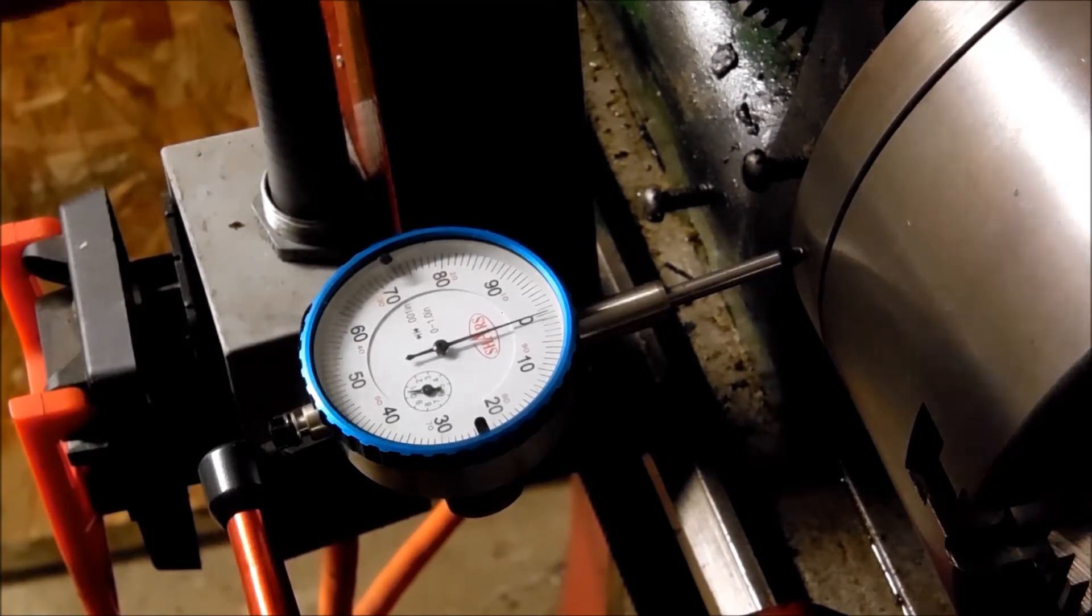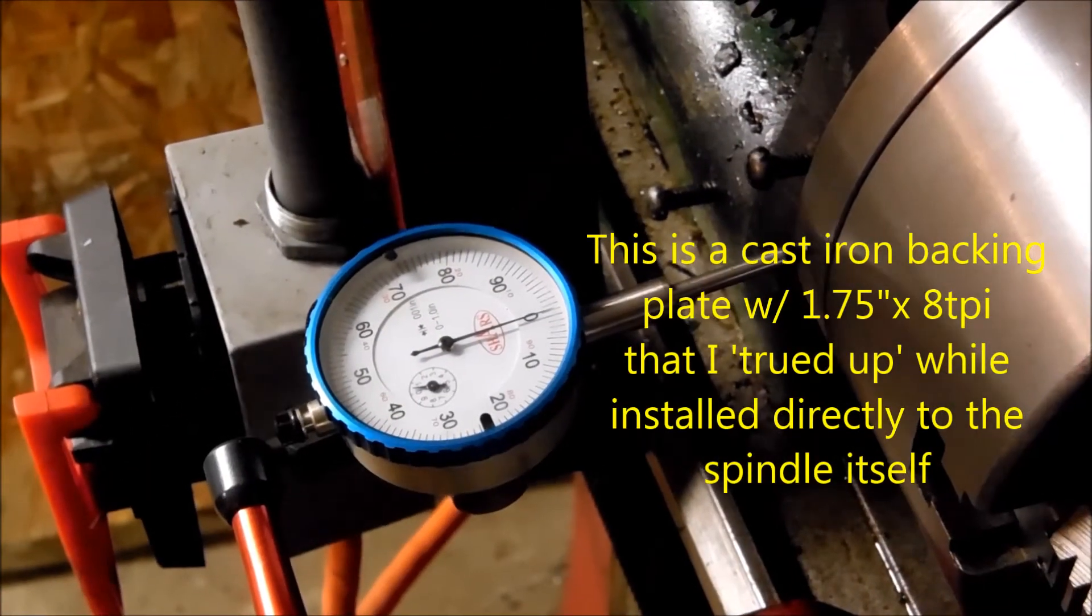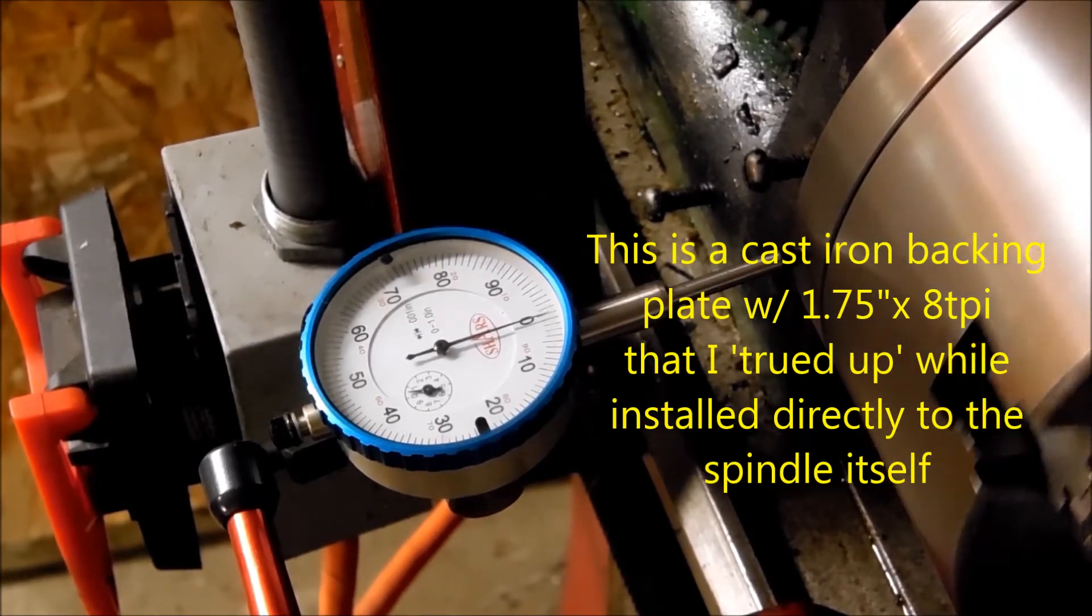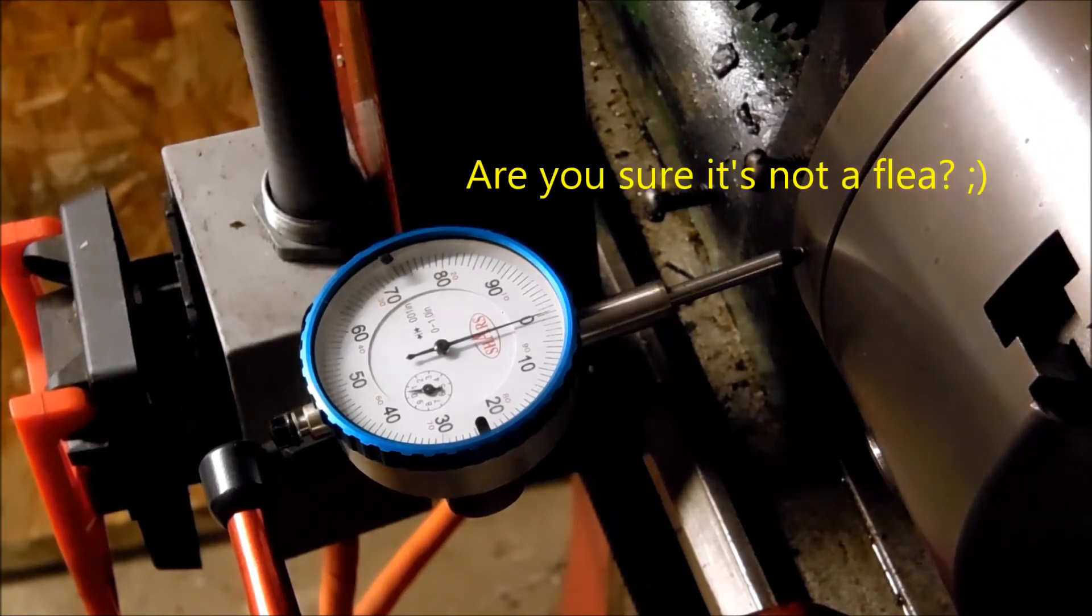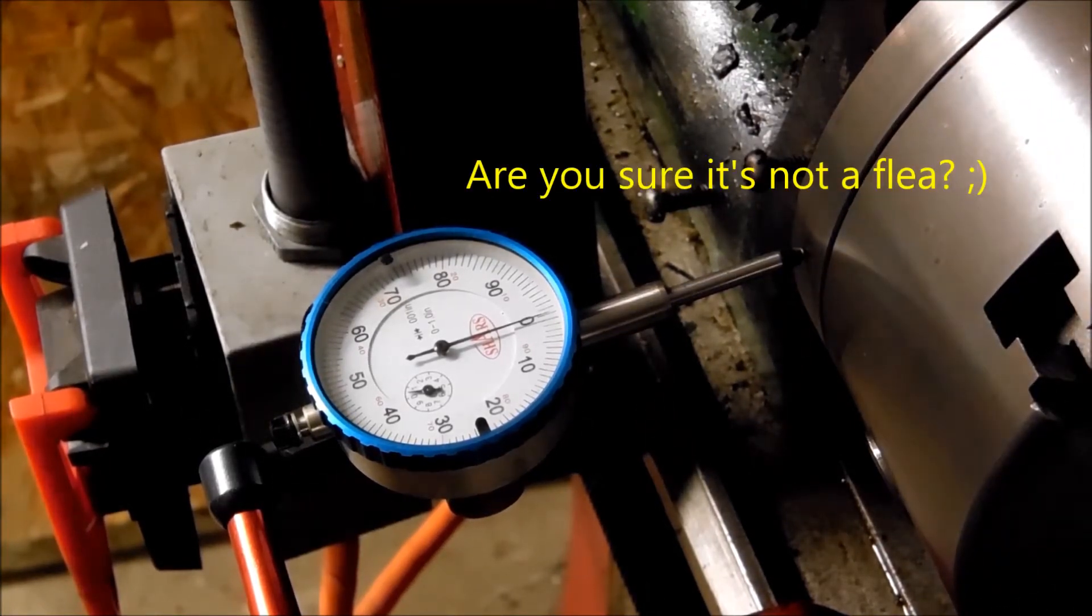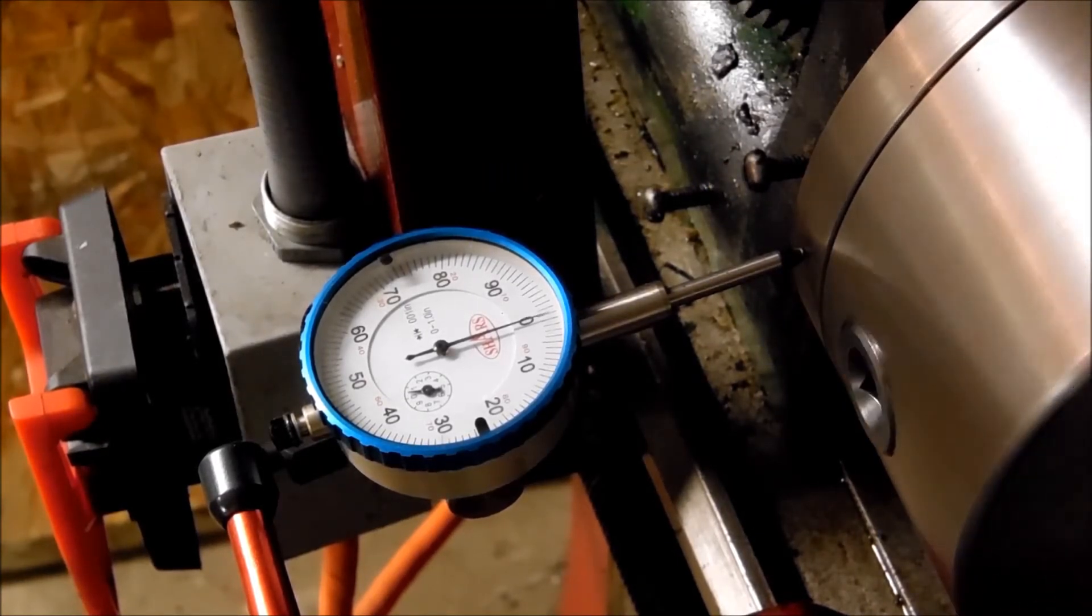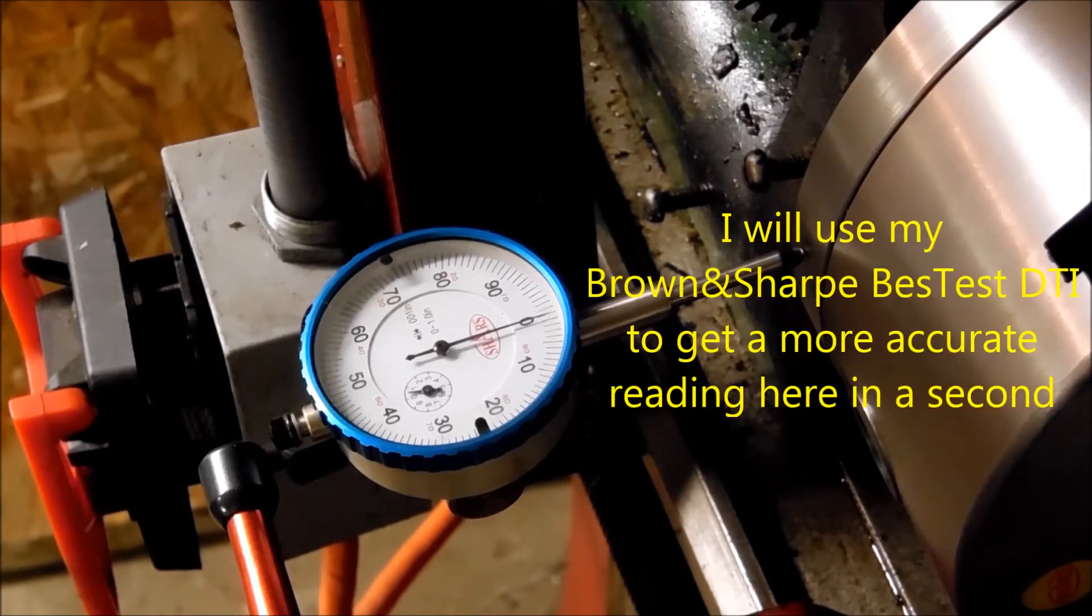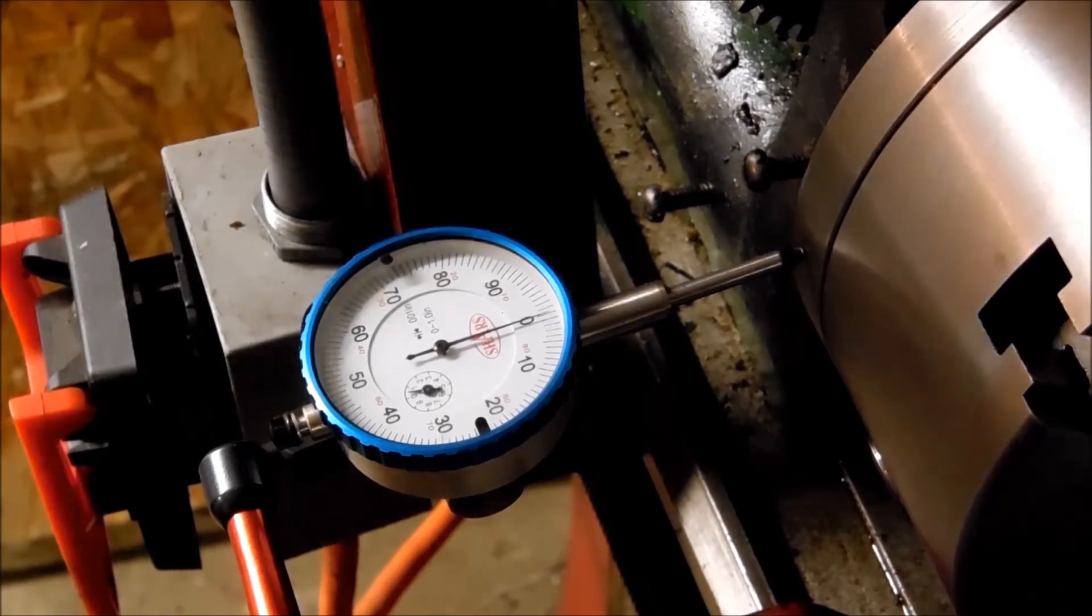So, anyways, here's the runout on the backing plate, and there really shouldn't be much. Let's see if I can do it without getting in your way. Yeah, I mean, it's just like a tick. It's less than 2 tenths. I mean, the needle's just barely moving. Could be surface noise, but actually probably not. It's pretty smooth. So, anyways, backing plate, good.